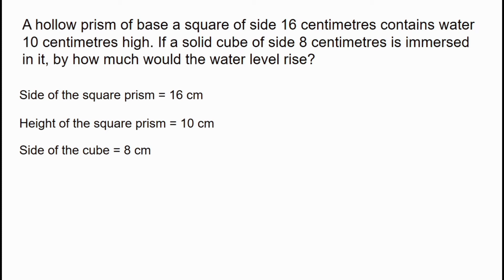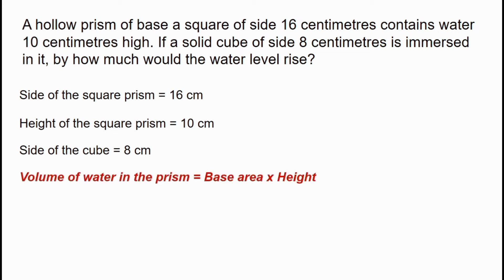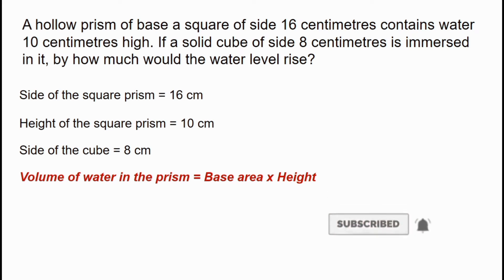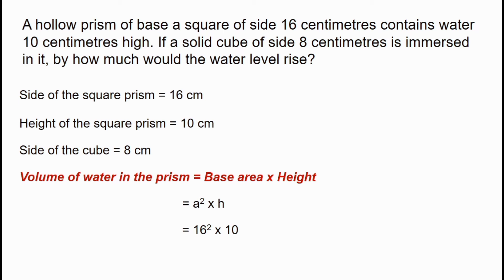Now we calculate the volume of water. The base is a square shape, so base area equals side squared. Volume of water equals base area into height, which is 16 squared into 10. That is 256 into 10, giving us 2560 cubic centimeters.